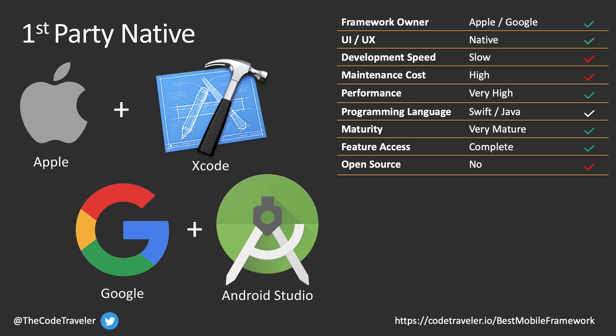One downside is that development speed is a little slower because we have to create the same app twice. Apple and Google use different programming languages for their tool sets, so we cannot reuse the same code between our apps. We have to rewrite those apps in two different code bases with two different engineers, which increases development costs, maintenance costs, and slows down our time to market. But because we're using the first-party tools, whenever Apple or Google releases a new feature or API, it'll be available in Xcode or Android Studio that same day, so we never have to worry about falling behind.